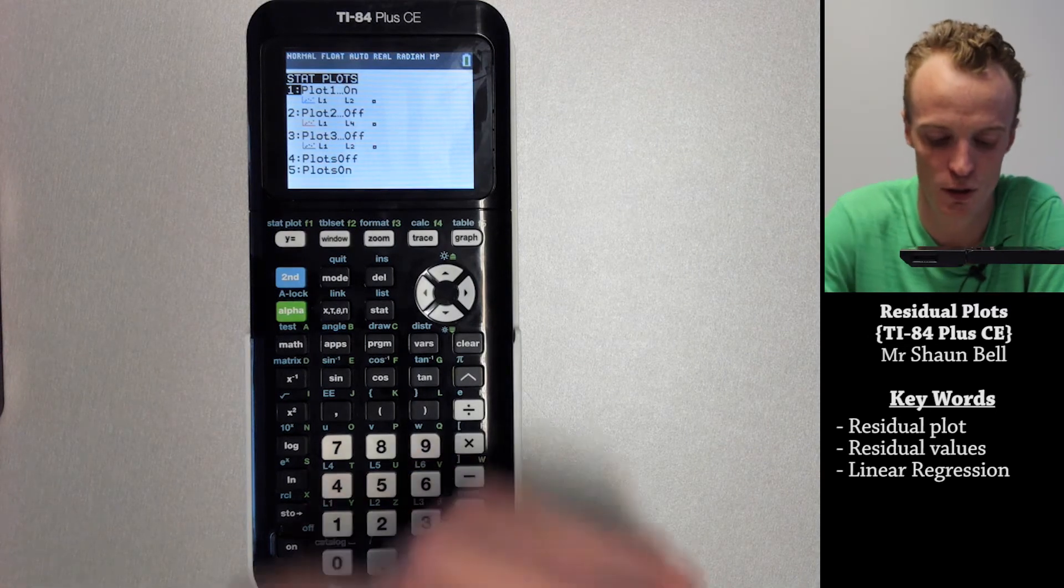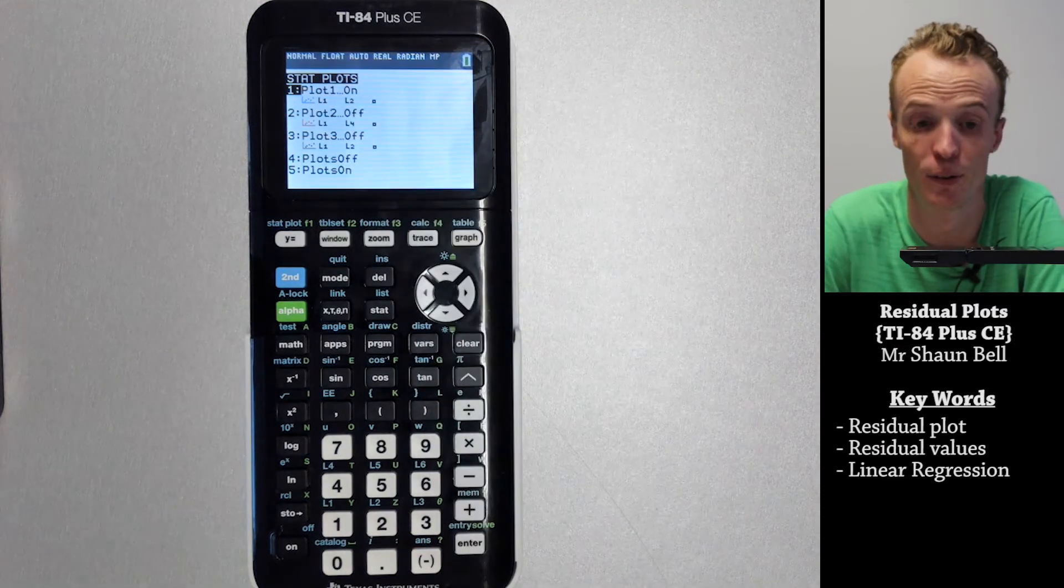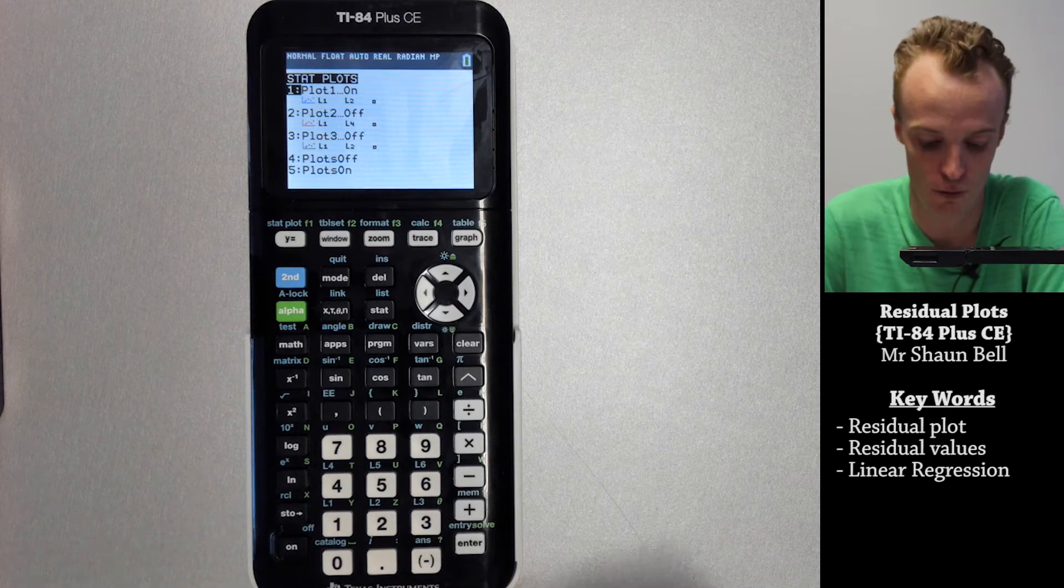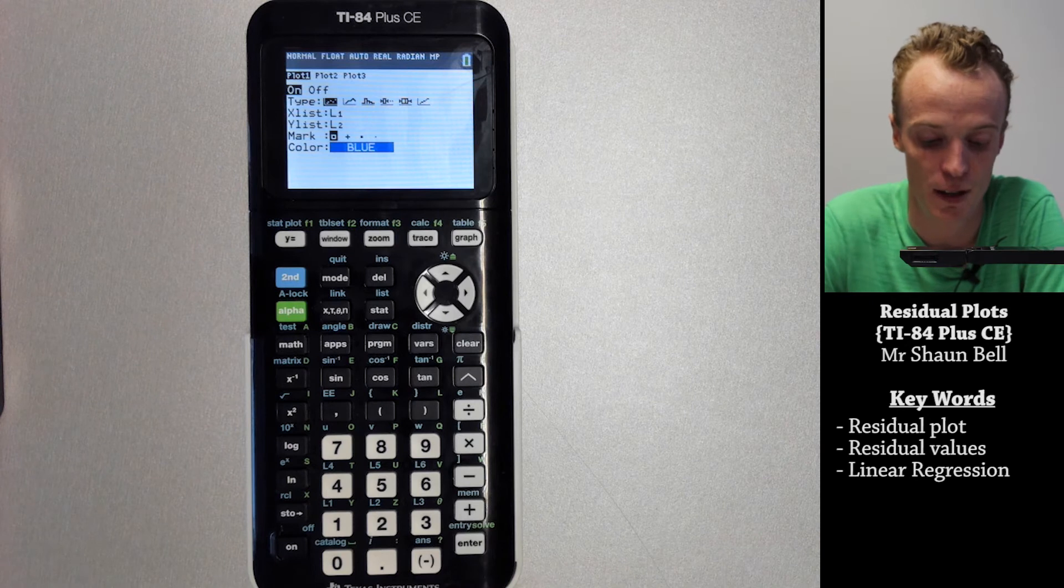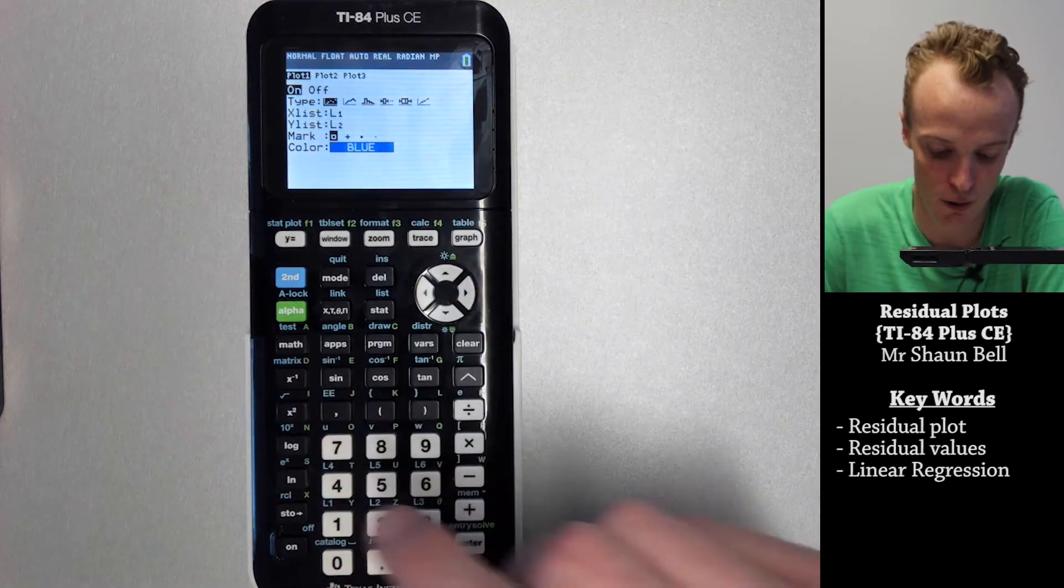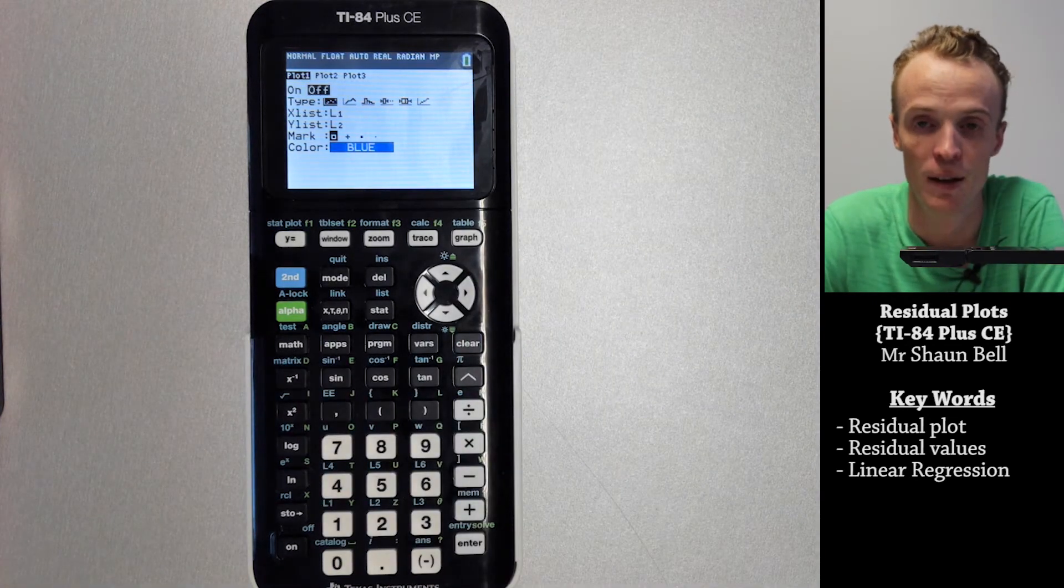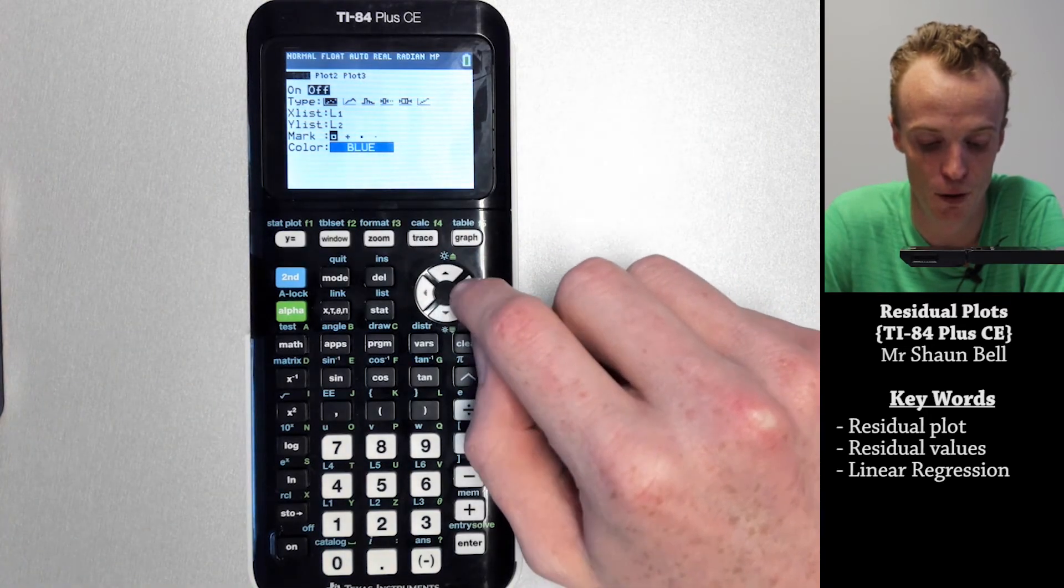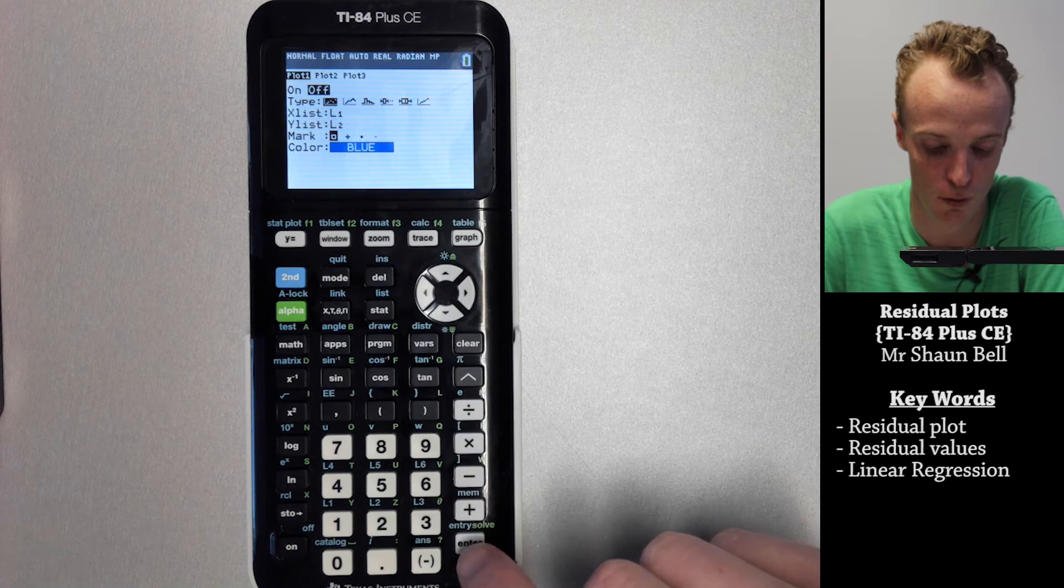I may not want to change the list one and list two that this is currently graphing. Instead I may choose to turn it off. So I press enter to go in here and I highlight off and press enter. Now I go to plot two by moving the cursor up until it's on plot two and hit enter.